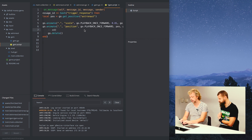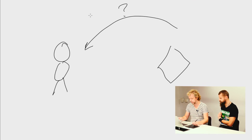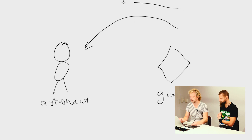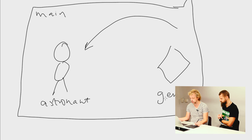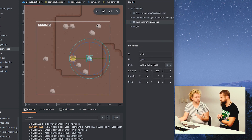We have the address for the astronaut. This works because the gem is called `gem` and the player is called `astronaut` — and as long as these two are in the same collection at the same level, they can refer to each other by name. But in a real game you want to structure things more than just throwing everything into one collection.